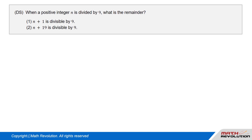When a positive integer n is divided by 9, what is the remainder? Condition 1: n plus 1 is divisible by 9. Condition 2: n plus 19 is divisible by 9.